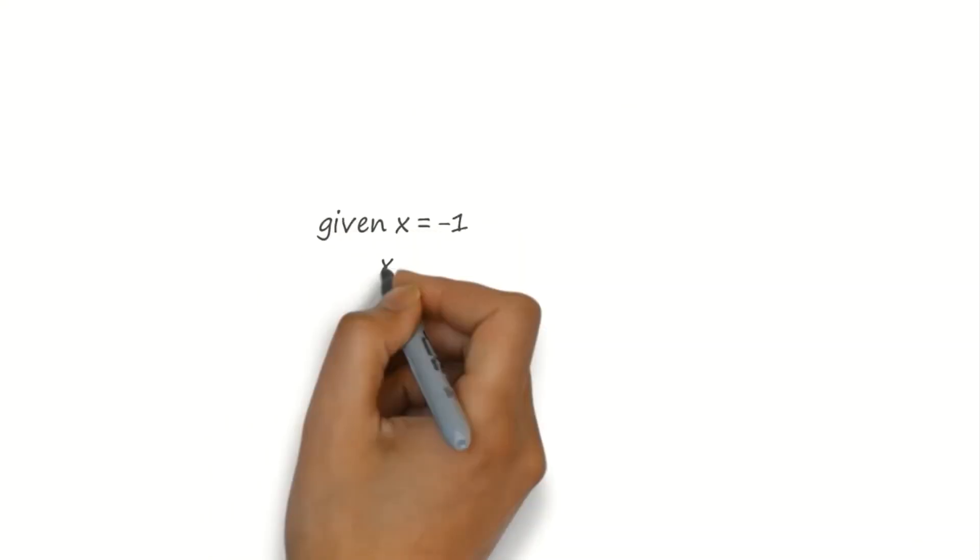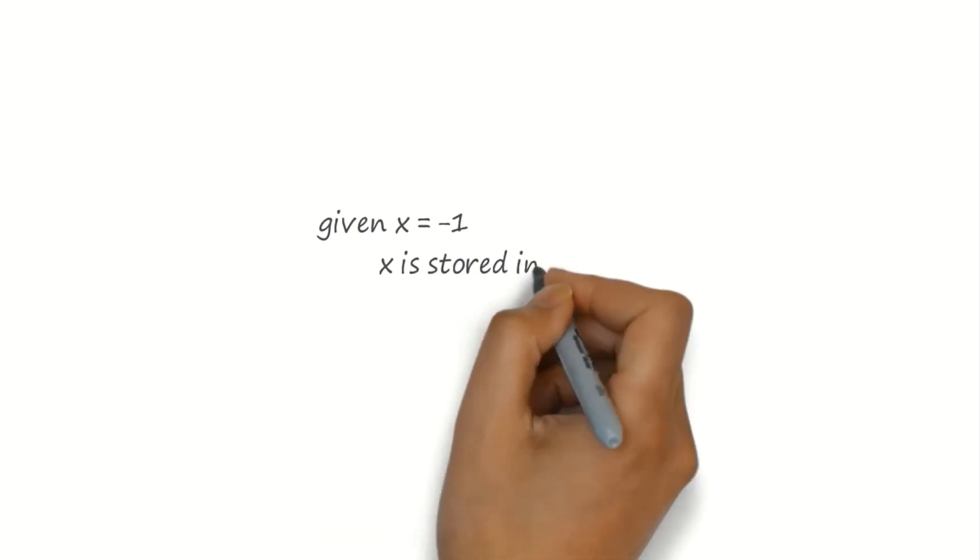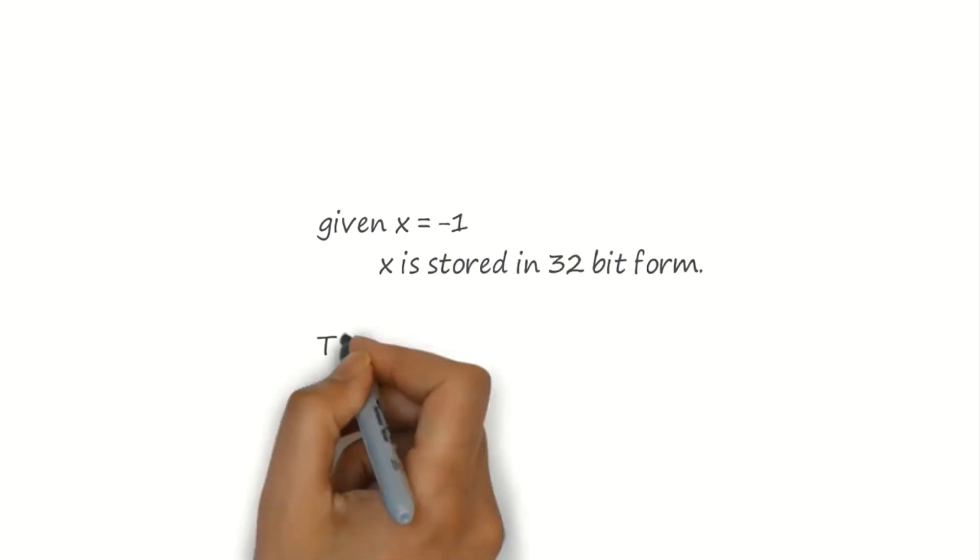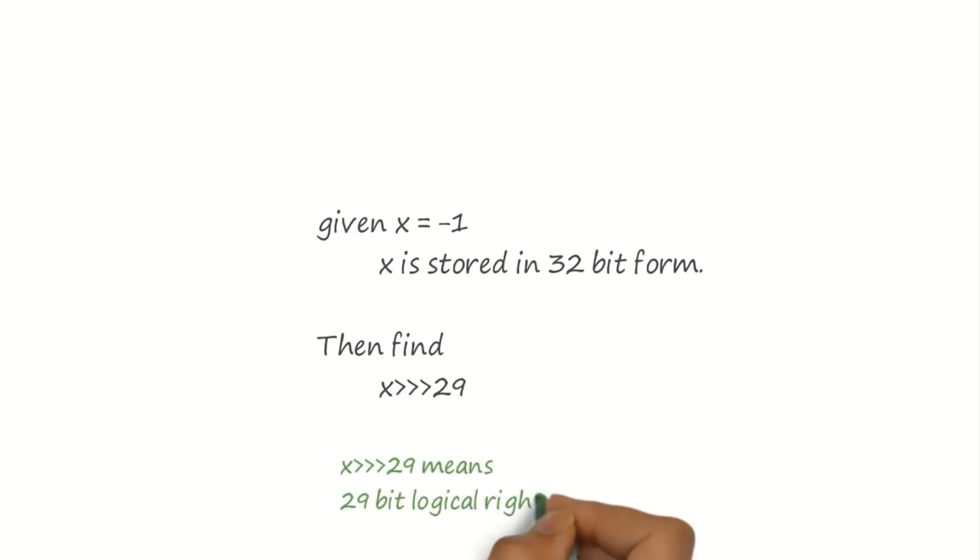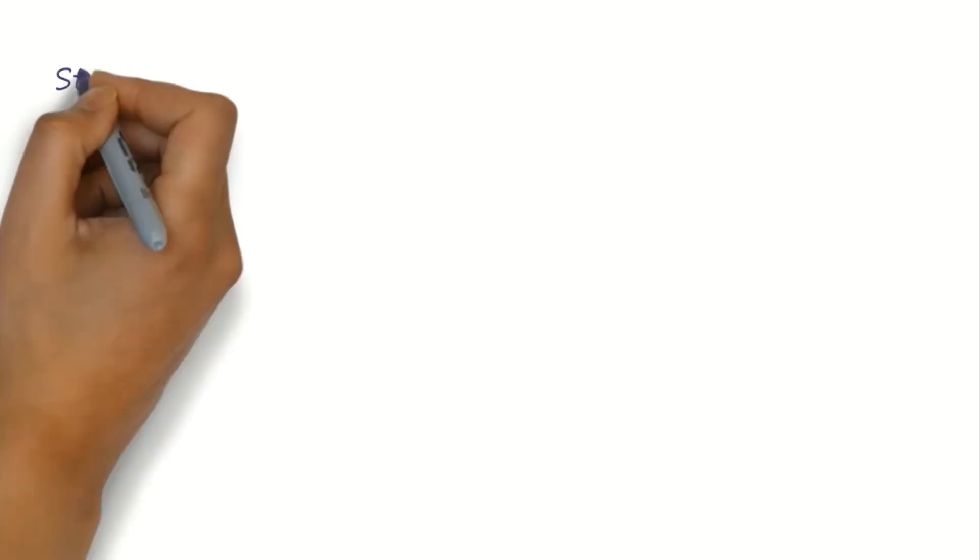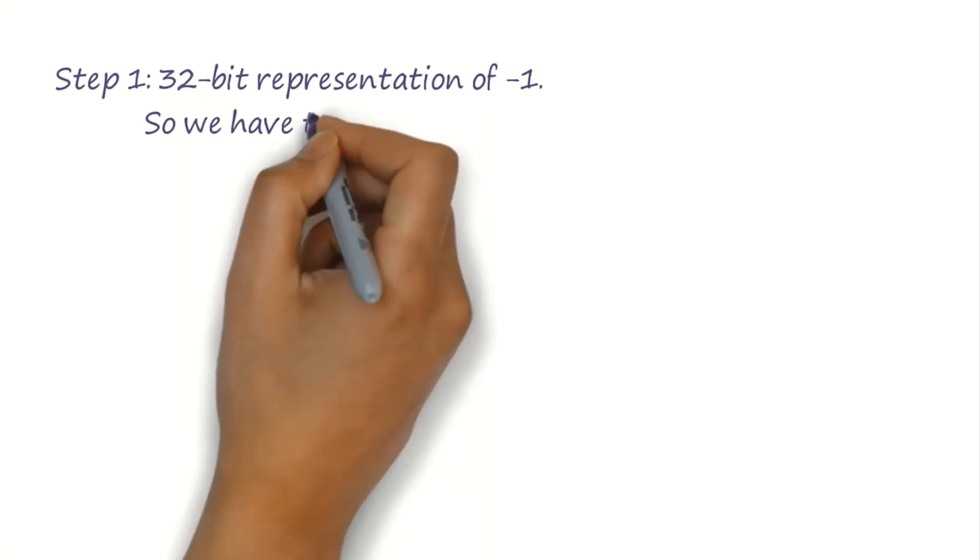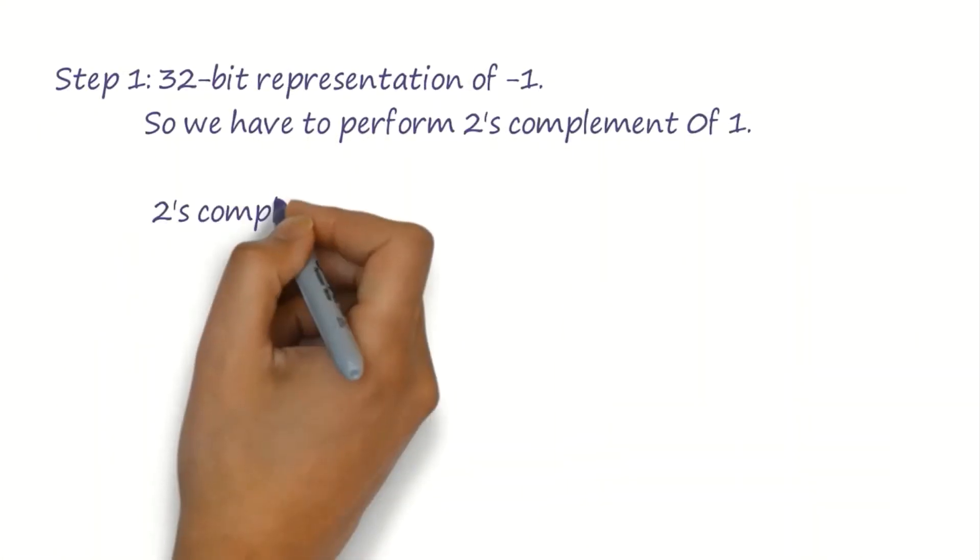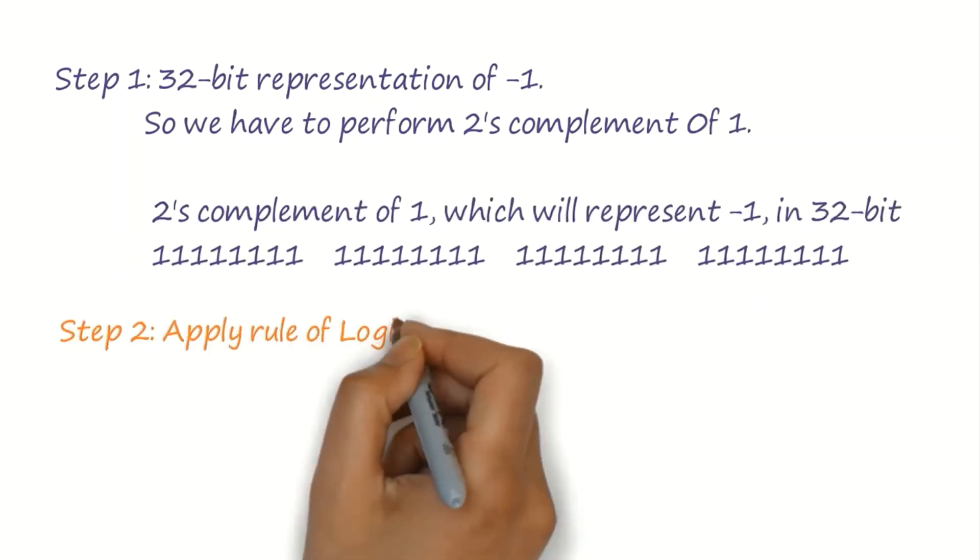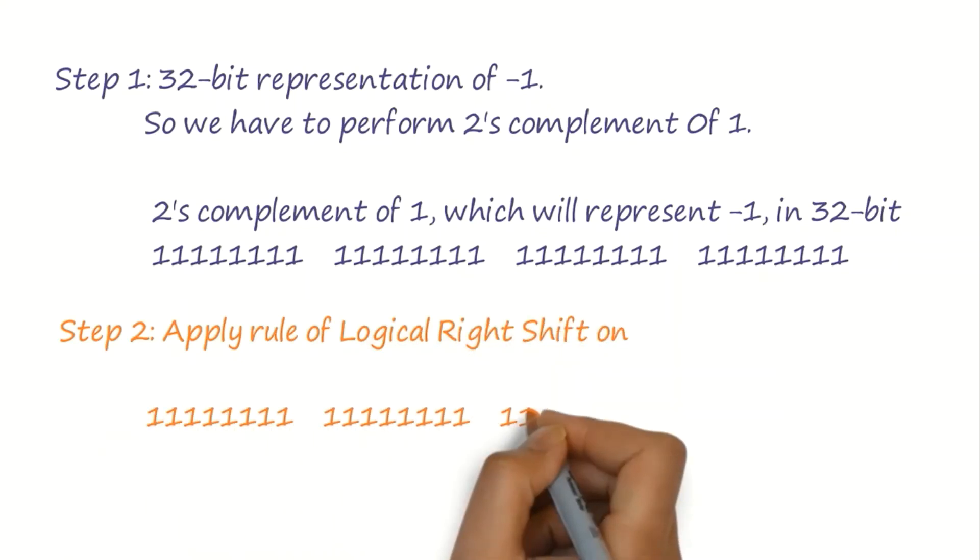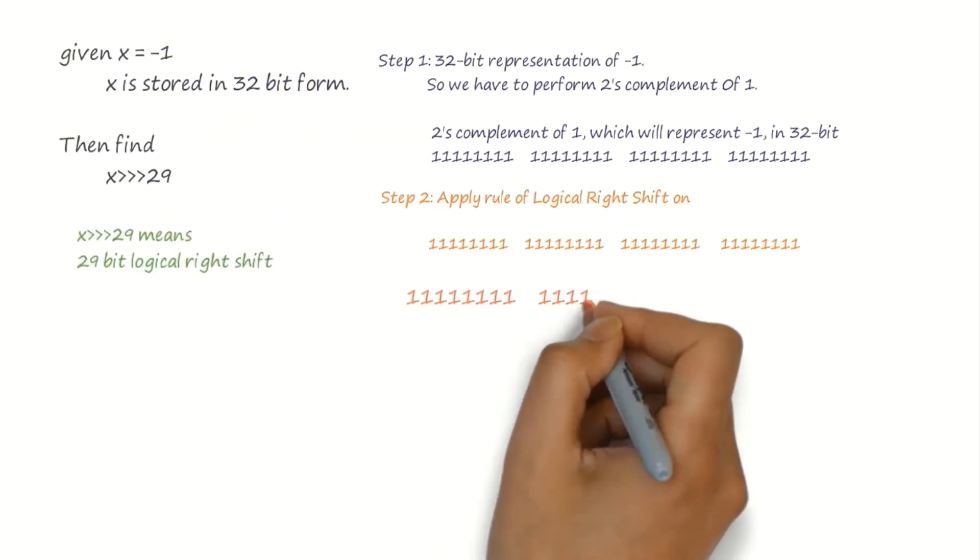Now consider a problem where x is minus 1 and it must be represented in 32-bit format. We have to find logical right shift on x by 29 bits. Step 1 will be 2's complement representation of minus 1 in 32 bits.